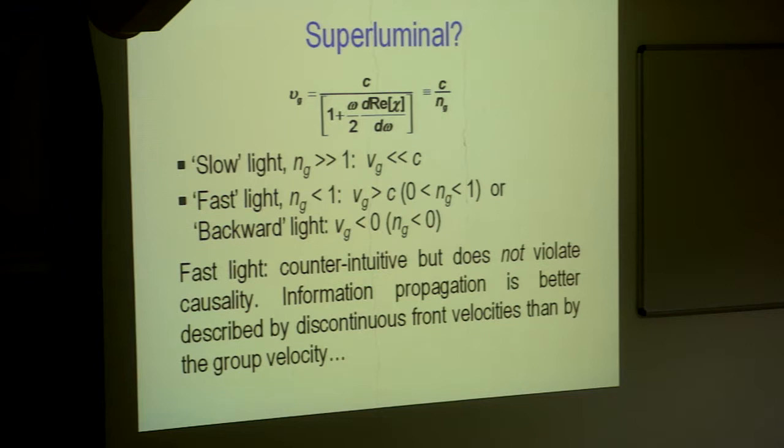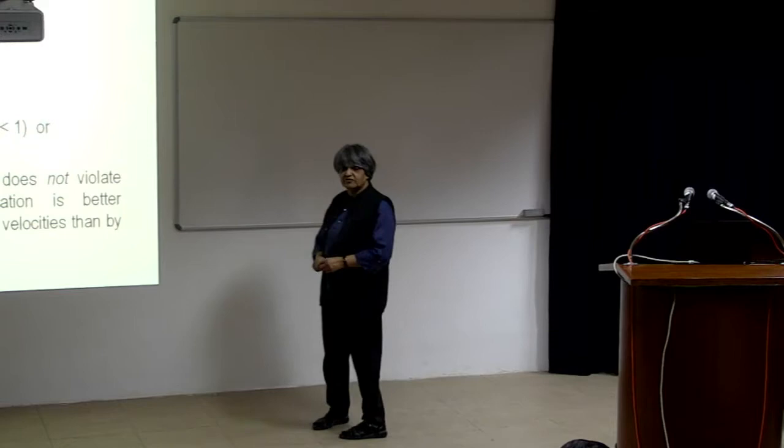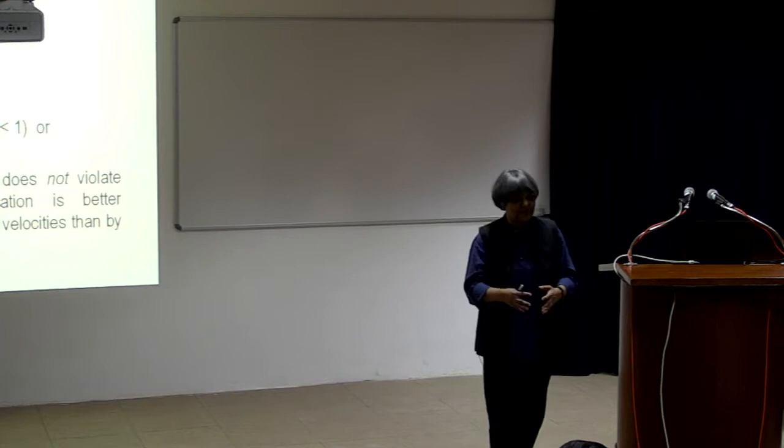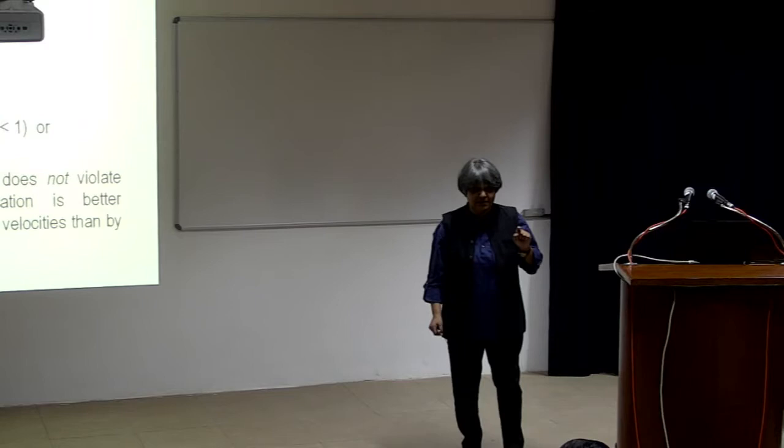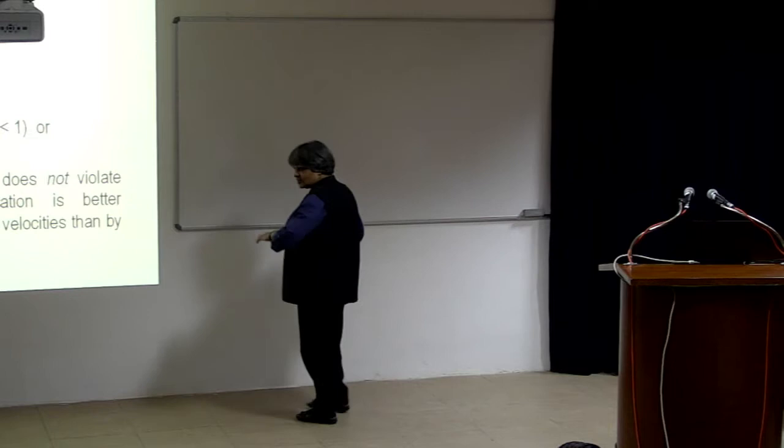Einstein's special theory of relativity says that speed of information cannot be greater than the speed of light. If that happens, then I can go to my past, kill my grandfather and so I would not be born. You can actually violate all kinds of principles of causality that we believe in in physics, if you could transmit information faster than the speed of light.